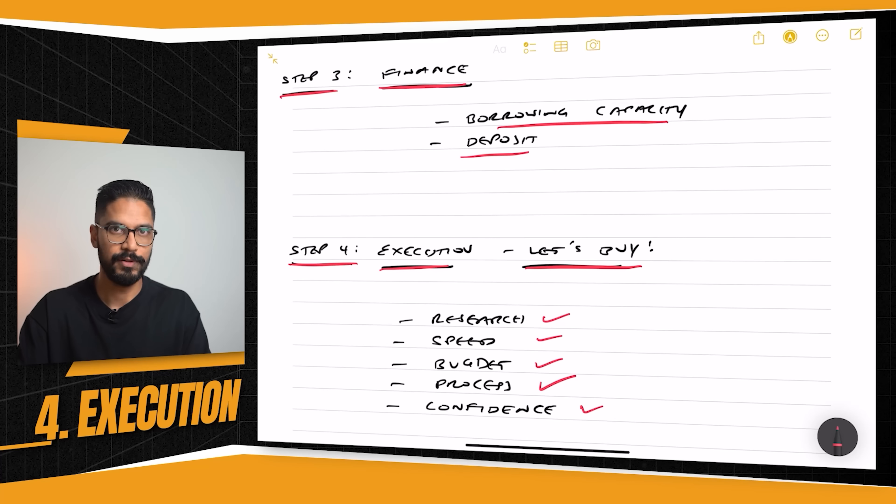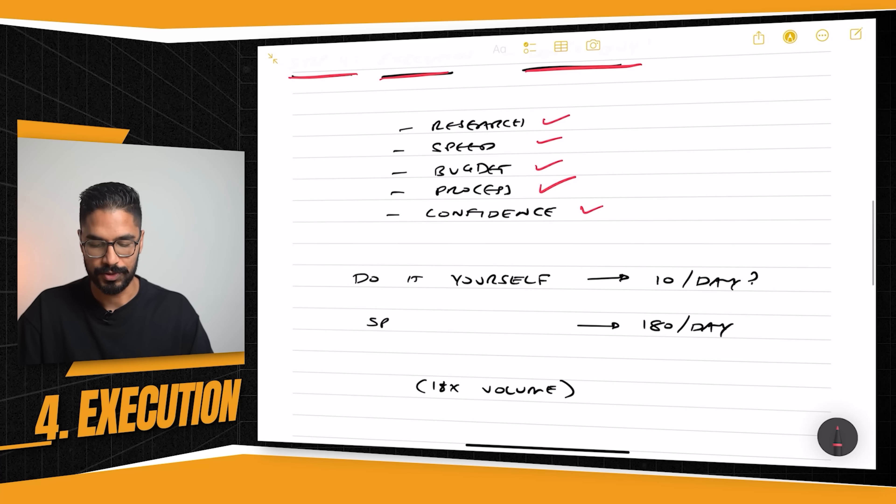If you've gone out there and bought 10 properties, chances are your level of confidence is much higher for your 11th property than it was for your first property. And if you're someone who's never bought property, your confidence is going to be at an all-time low because you've never done this before. So you've got the choice of doing it yourself or going out and outsourcing it.